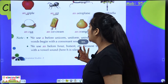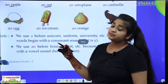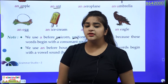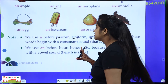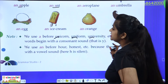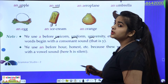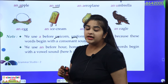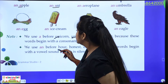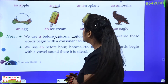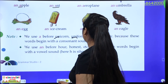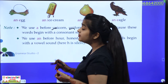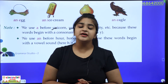Now, we use A before 'unicorn.' You might say we use A only before consonants, but unicorn starts with U. Unicorn, uniform, university — these all start with U. We still write A before them because these words begin with a consonant sound — that Y sound. Even though U is a vowel in A, E, I, O, U, when we pronounce these words they come with a consonant sound. So what do we write? A — not AN. Okay?